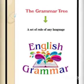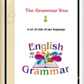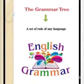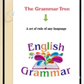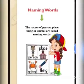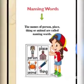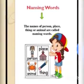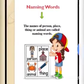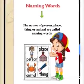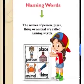Today, I'm gonna start our new topic. Let me tell you the definition of naming words. The names of person, place, thing, or animal are called naming words. Now, I'll show you the pictures of naming words.